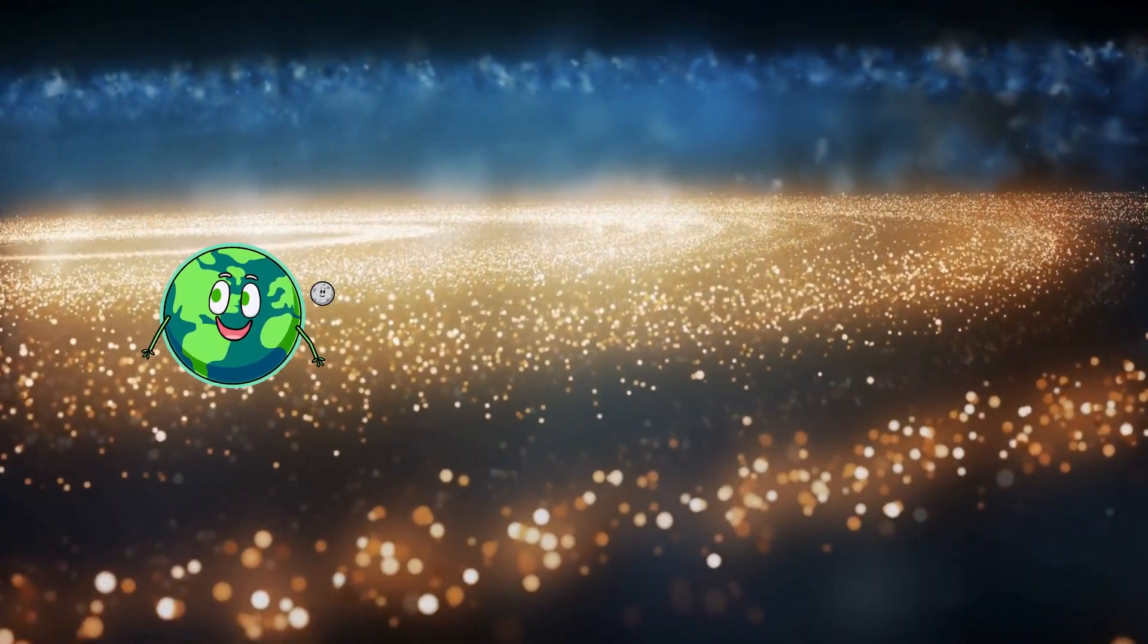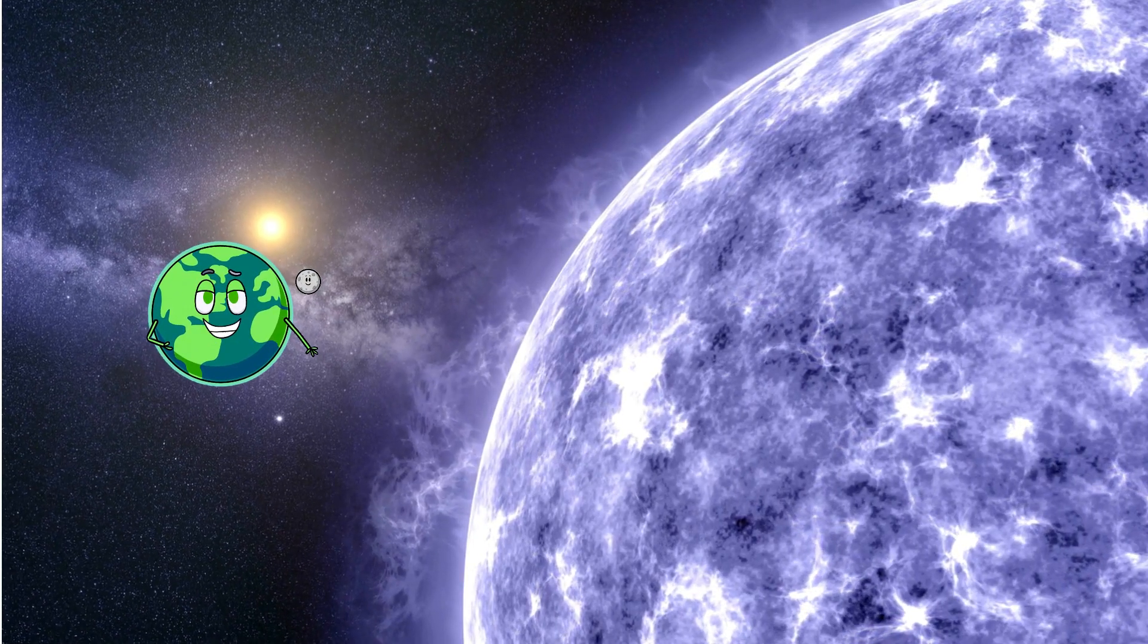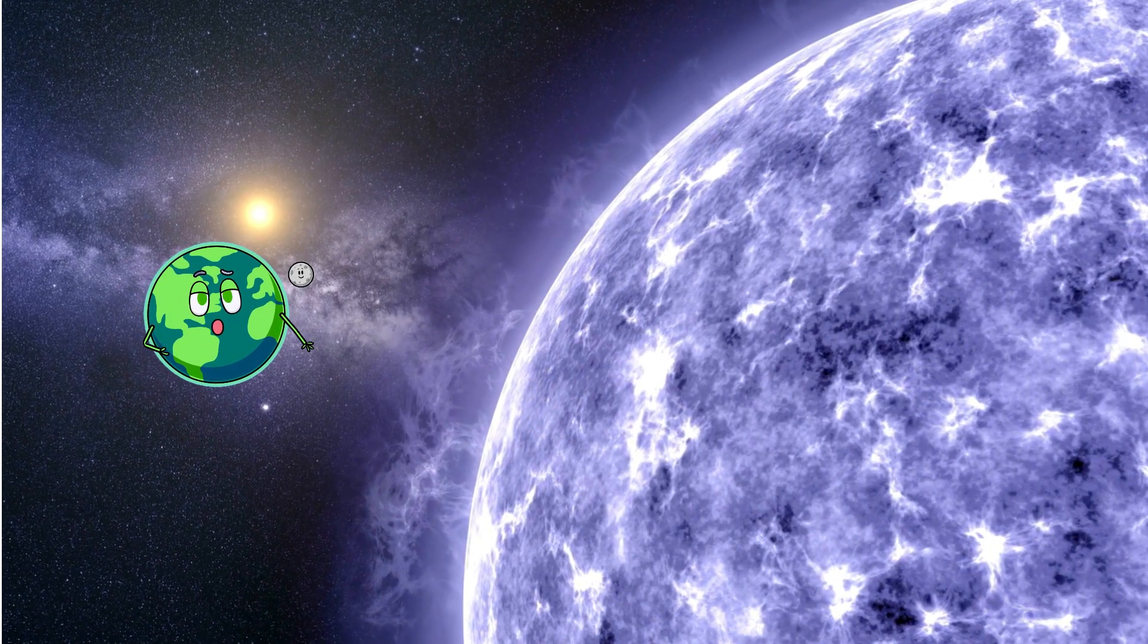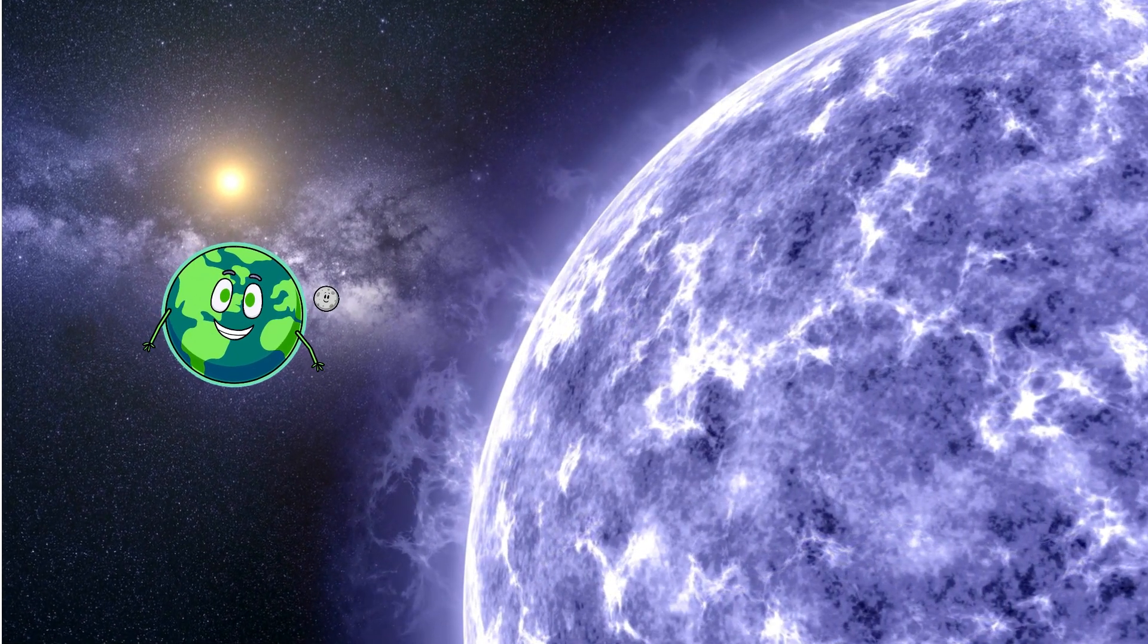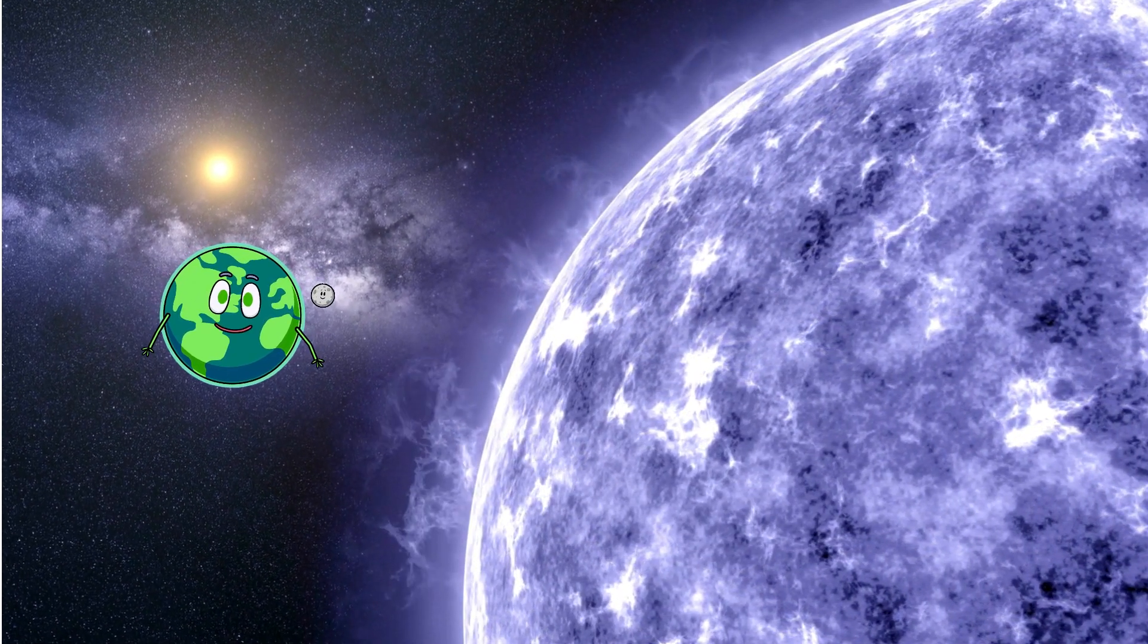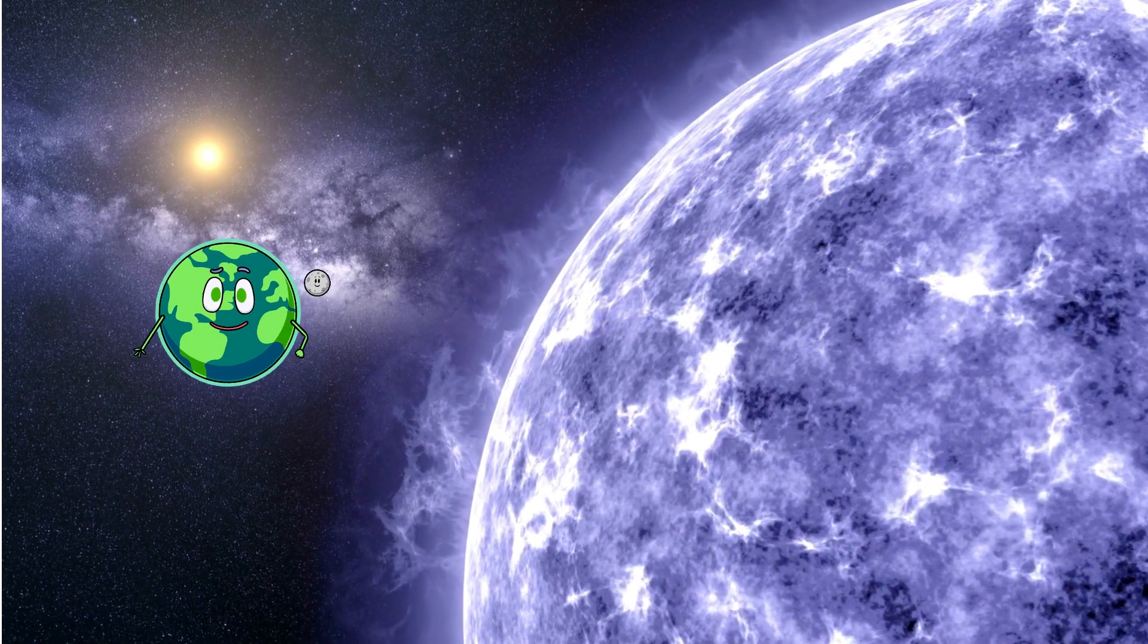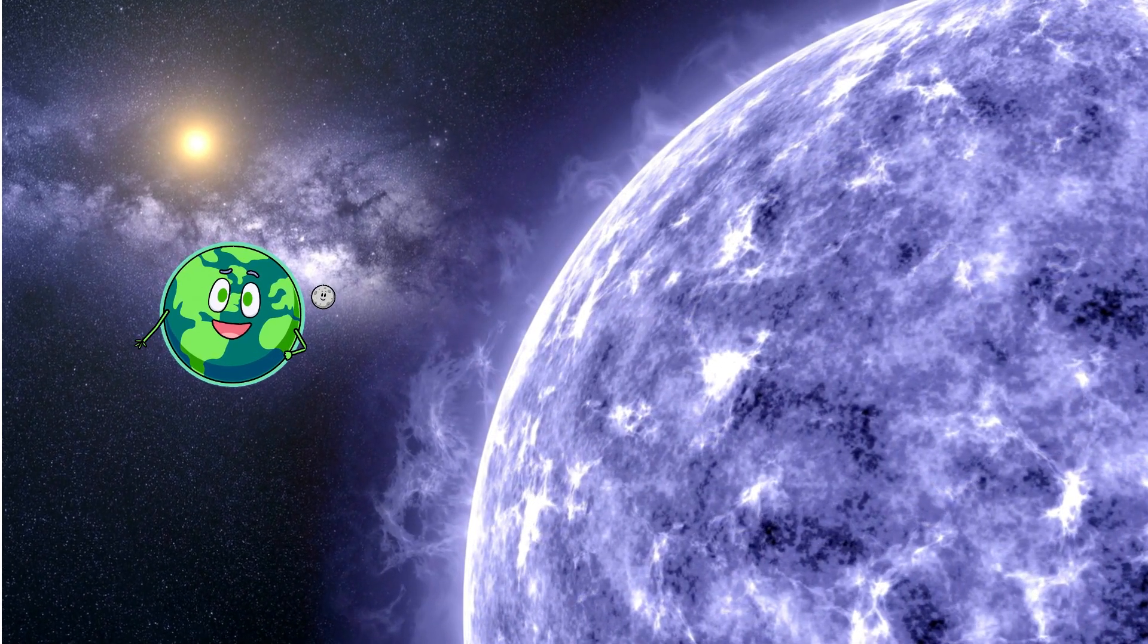Now let's talk about their density. Neutron stars are so dense that a teaspoon of their material would weigh about a billion tons on Earth. That's like squishing a mountain into a teaspoon. They're so dense because when the star collapses, its particles get squeezed together really tightly.